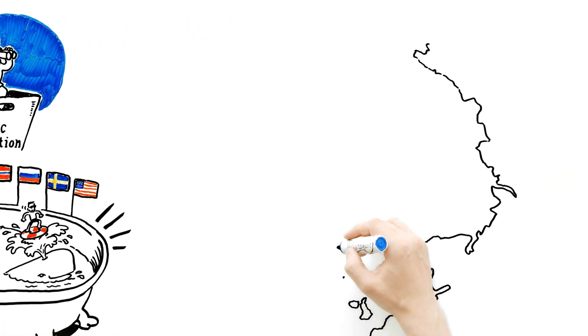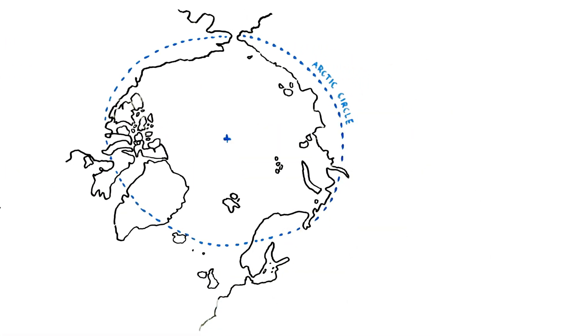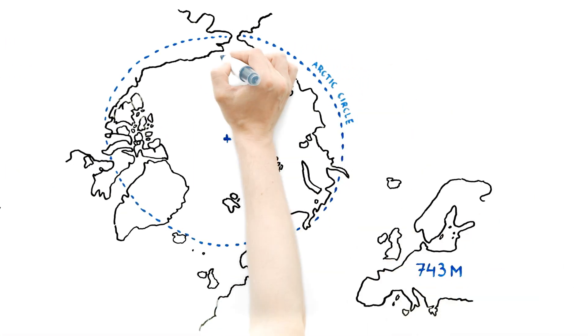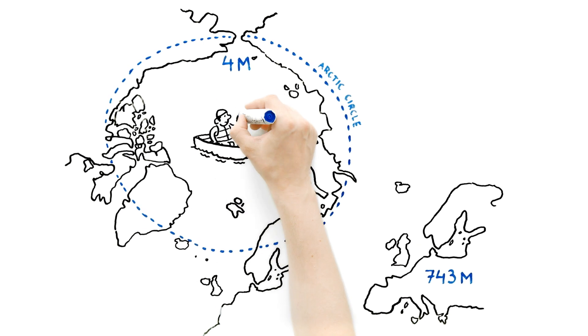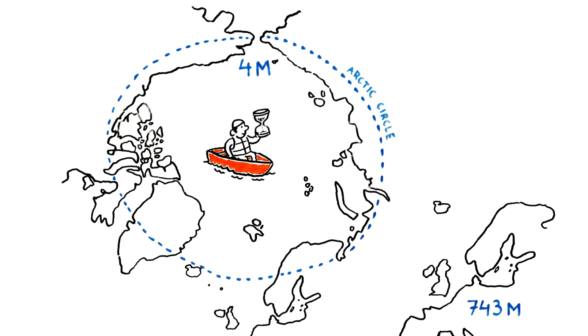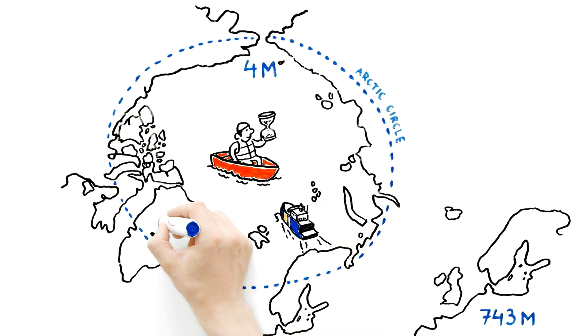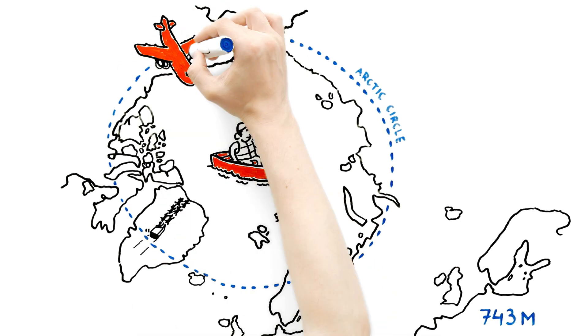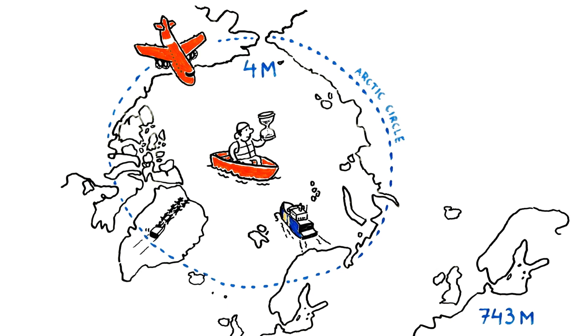The Arctic region is one and a half times as big as Europe, but only 4 million people live there. It could even take several days for help to arrive at a ship in trouble. Cooperation is crucial if we want to secure the safety of people and the environment.